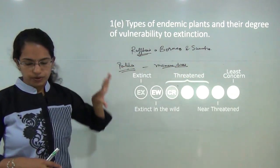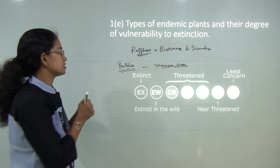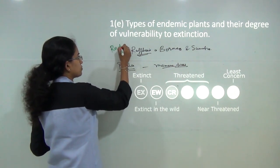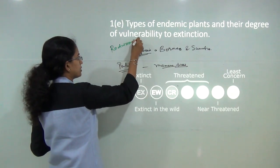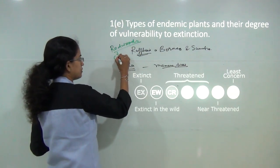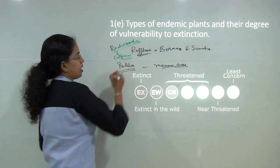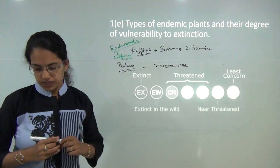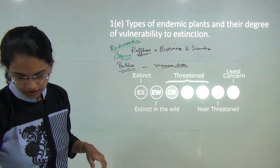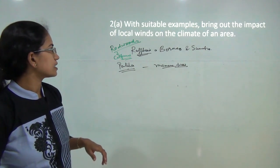Another important endemic species is the redwoods, once considered home to dinosaurs. Redwoods in California, US are now being destroyed mainly due to waterlogging occurring in that region.